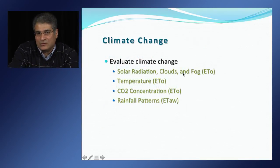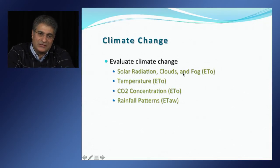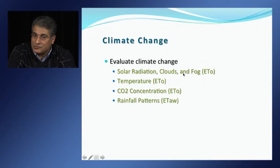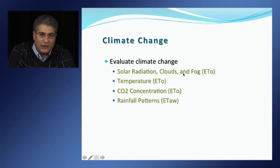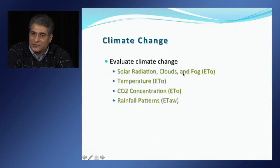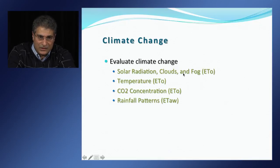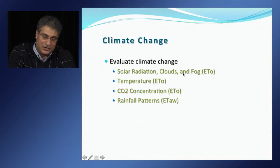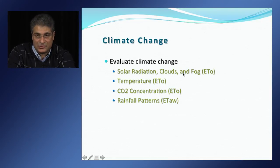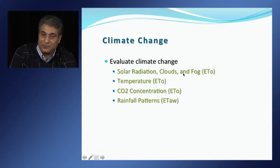COPPLUS is designed to allow us to investigate how changes in weather will affect water demand by agricultural irrigation. For example, by increasing or decreasing solar radiation by a factor, or changing the air temperature, we can see what would happen to ETo. COPPLUS is also designed to allow us to change CO2 concentration to investigate the effects of increasing CO2 on ETo, and to change the rainfall pattern to see what would happen to ET of applied water.